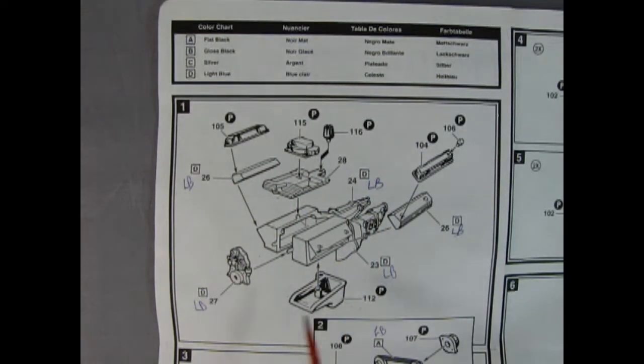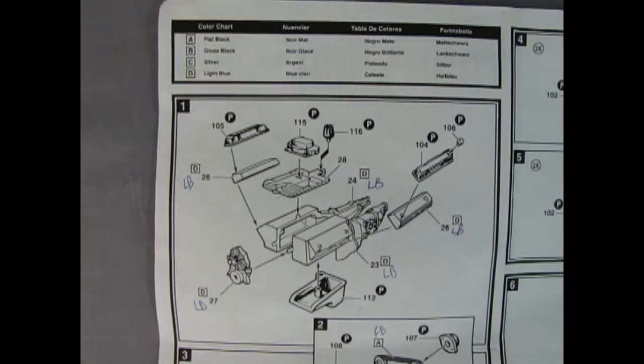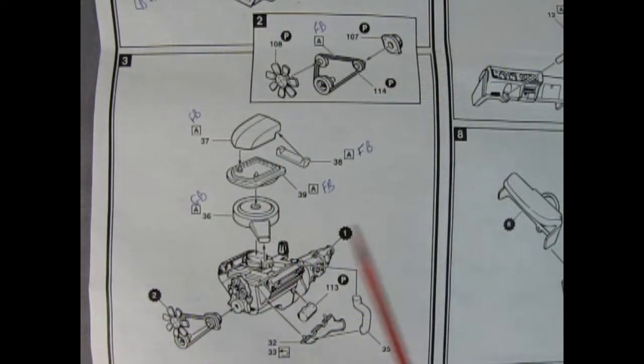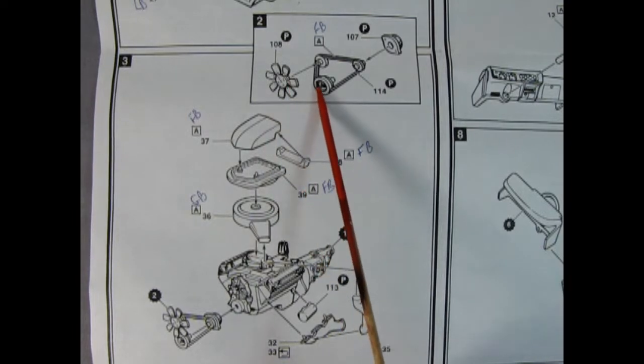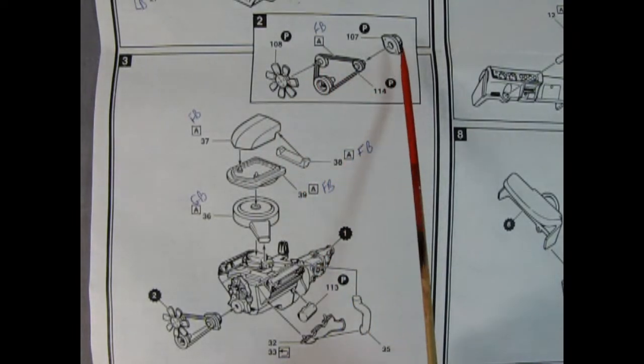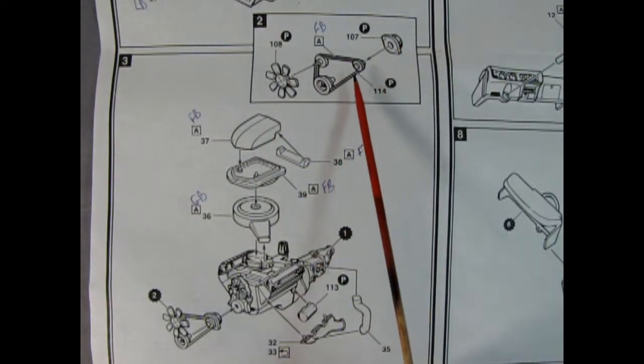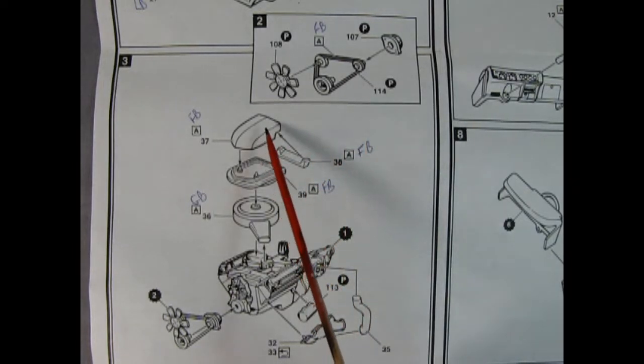In the first step panels two and three complete our engine, so I'll start with panel two first. Here we have our fan being glued onto our fan belt and pulleys and then we have our chrome alternator gluing on as well. There is the three pieces to make up the shaker scoop part of our car which bolt onto the top of the air cleaner and then that drops onto the carburetor.